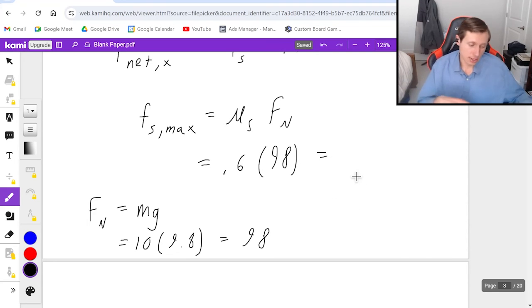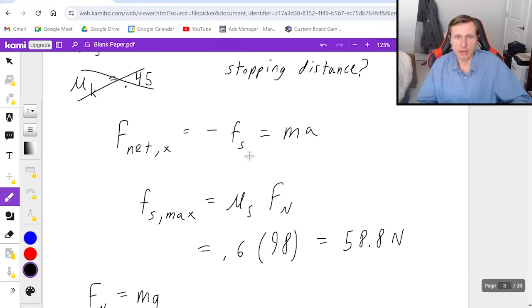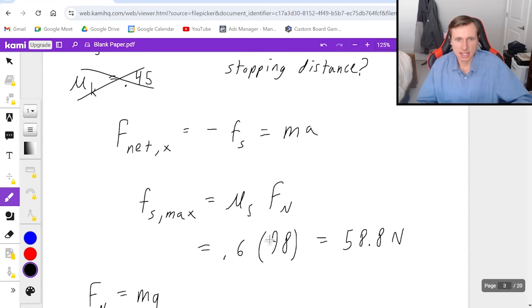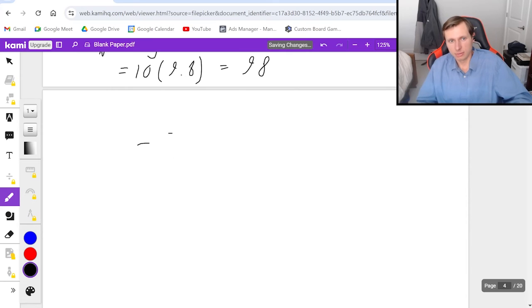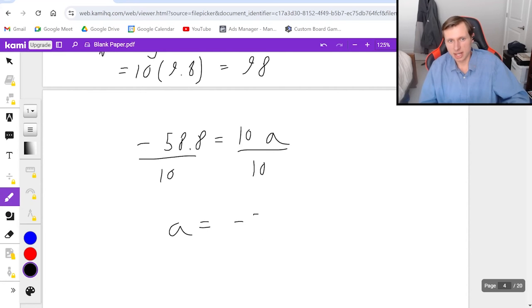So plugging that in a calculator, we get 58.8 Newtons. And that is the max static friction force, which I can now plug back in to F_net x. So in other words, negative 58.8 is equal to mass times acceleration. We know that mass is 10. So 10 goes right here, times acceleration. Divide both sides by 10. And we get acceleration equals negative 5.88. And that's meters per second squared.